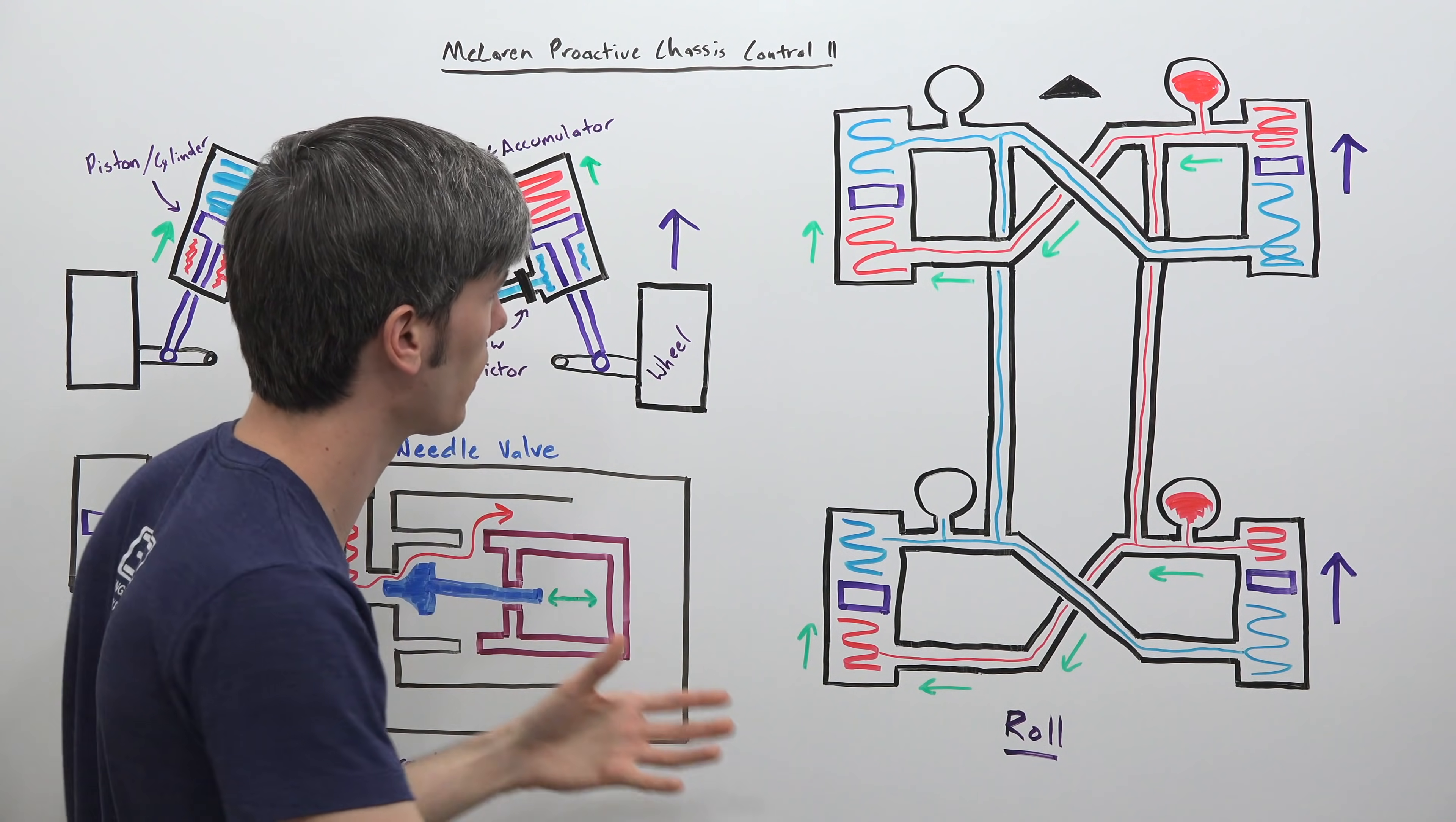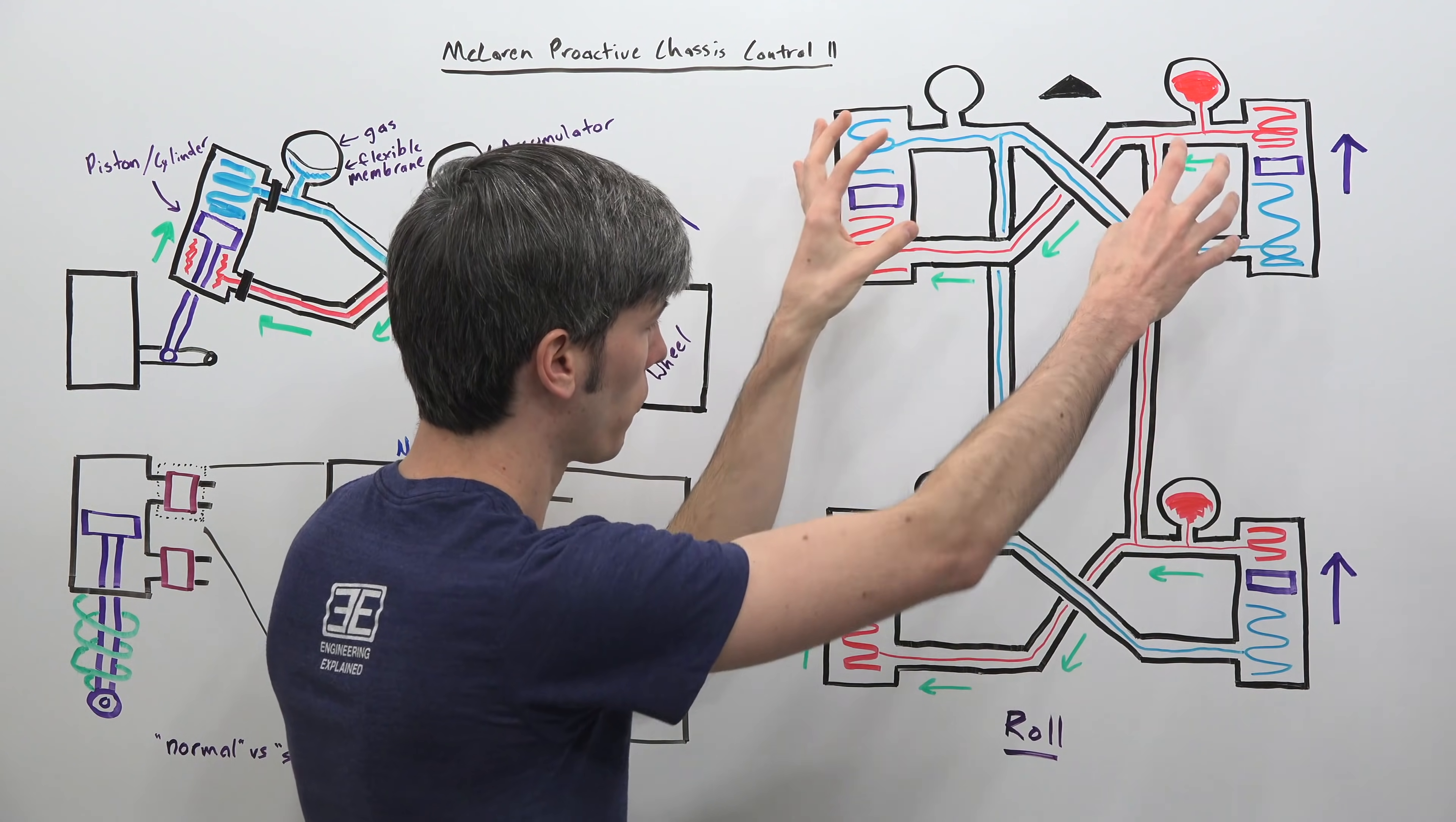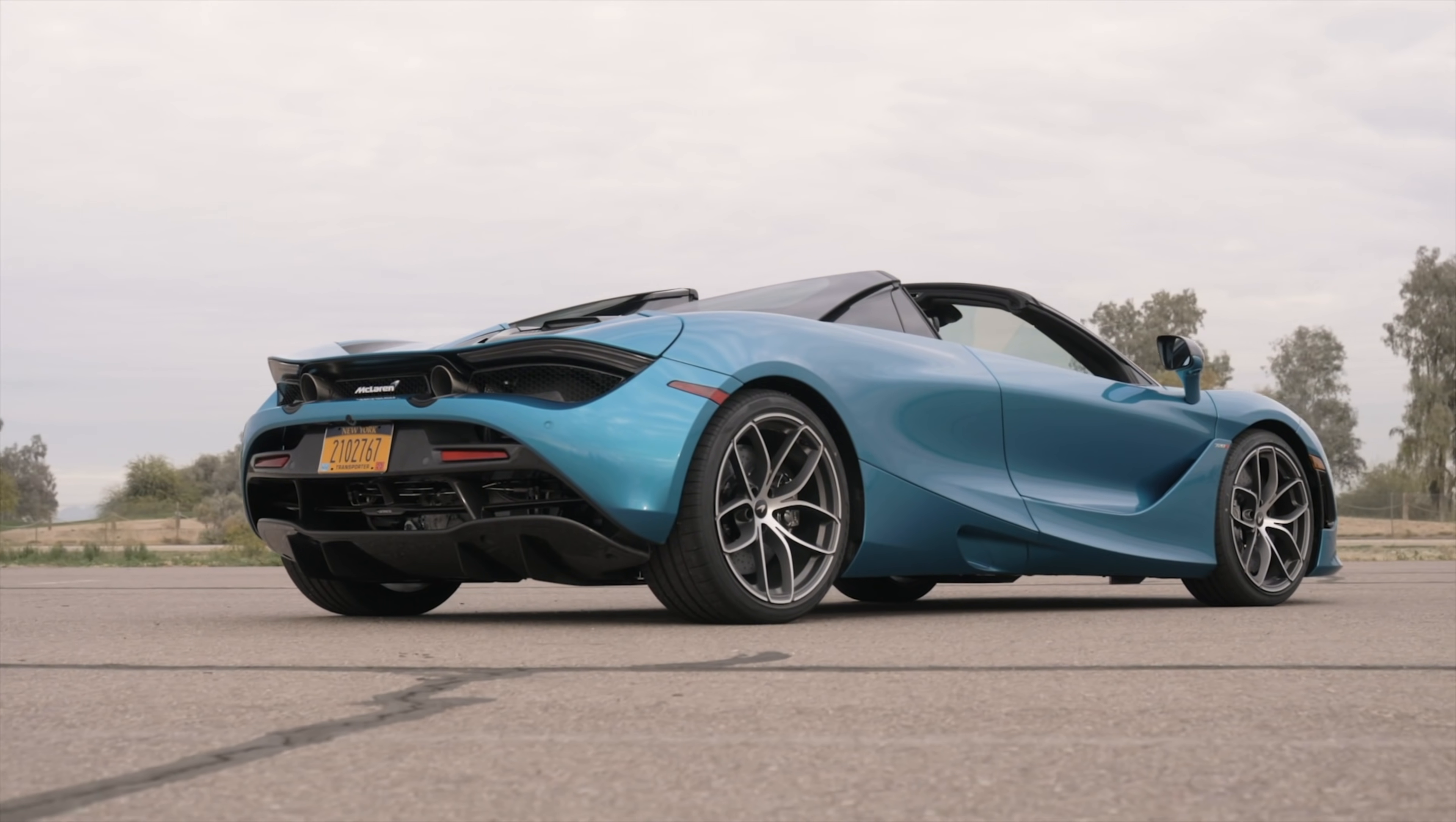So really when looking at this roll example it's not really any different than looking at each axle independently. There's not really a need in this scenario for the front and rear to be linked but the other scenarios will explain why that is the case.